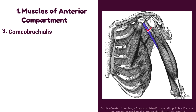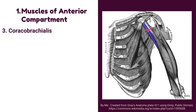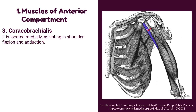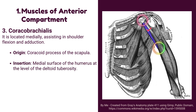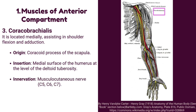Number 3: coracobrachialis muscle. It is located medially, assisting in shoulder flexion and adduction. Origin: it originates from the coracoid process of the scapula. Insertion: it is inserted into the medial surface of the humerus at the level of the deltoid tuberosity. Innervation: it is innervated by the musculocutaneous nerve.